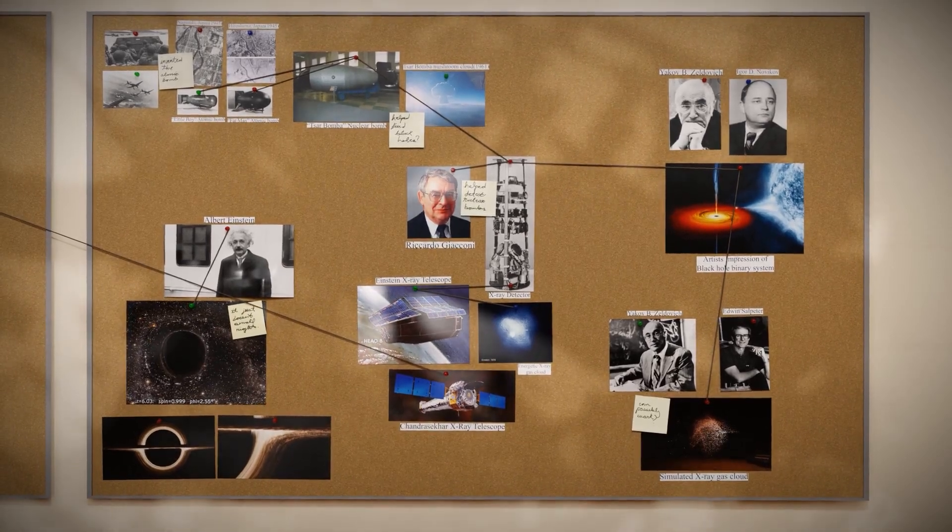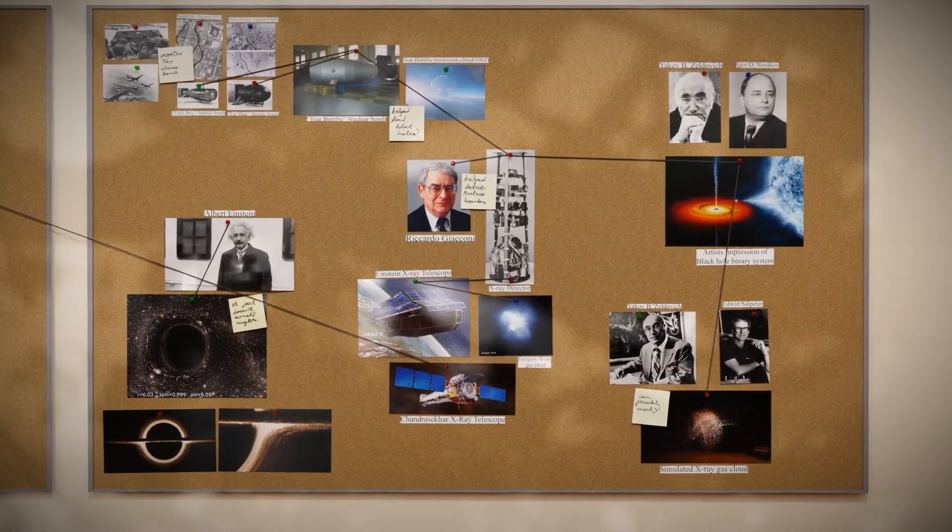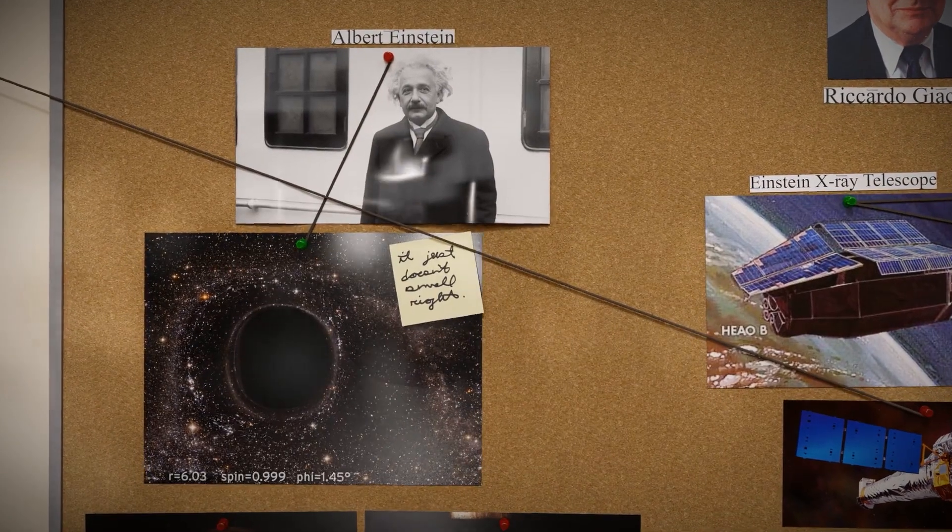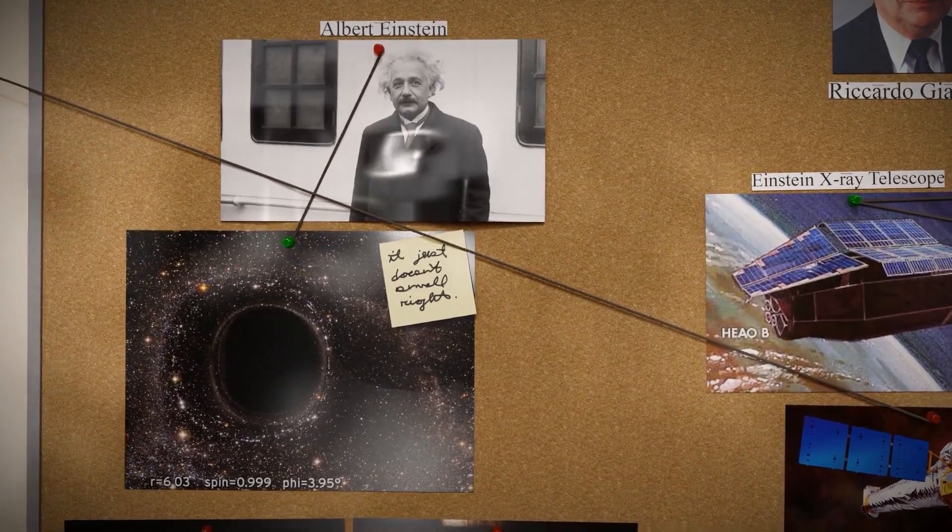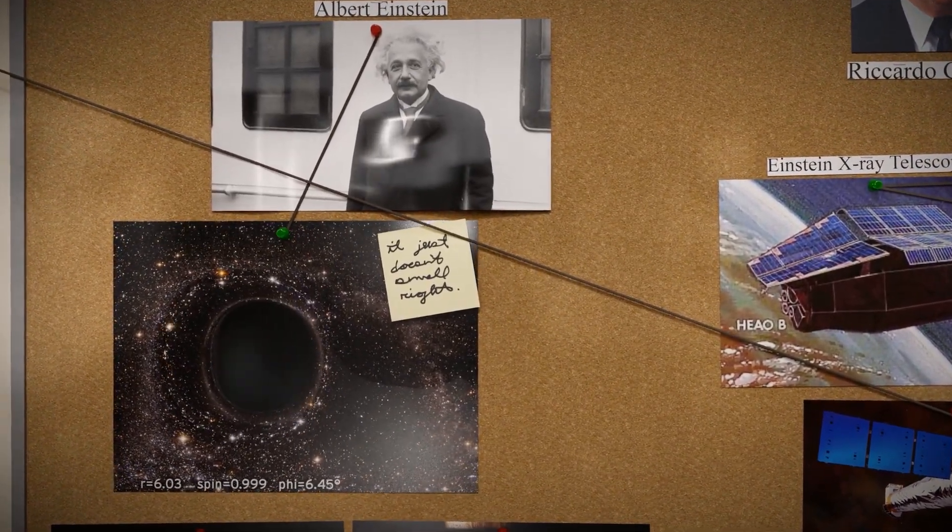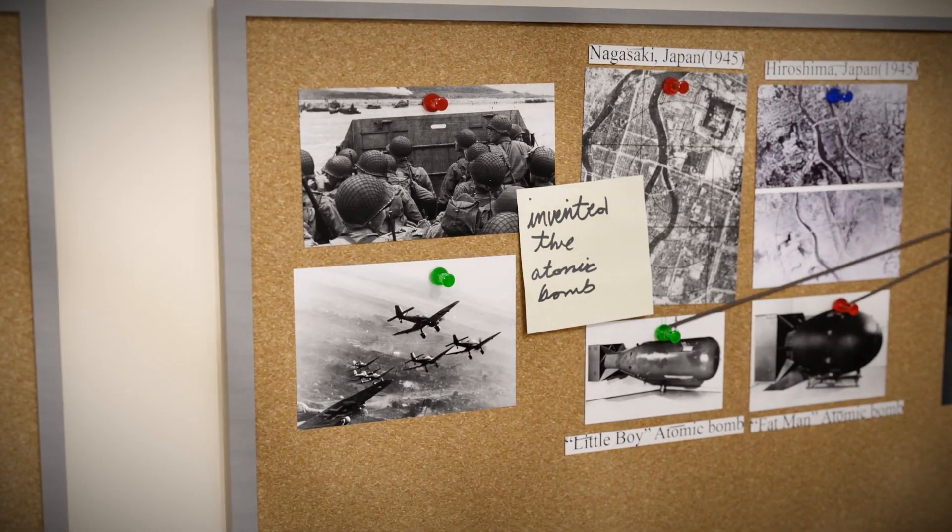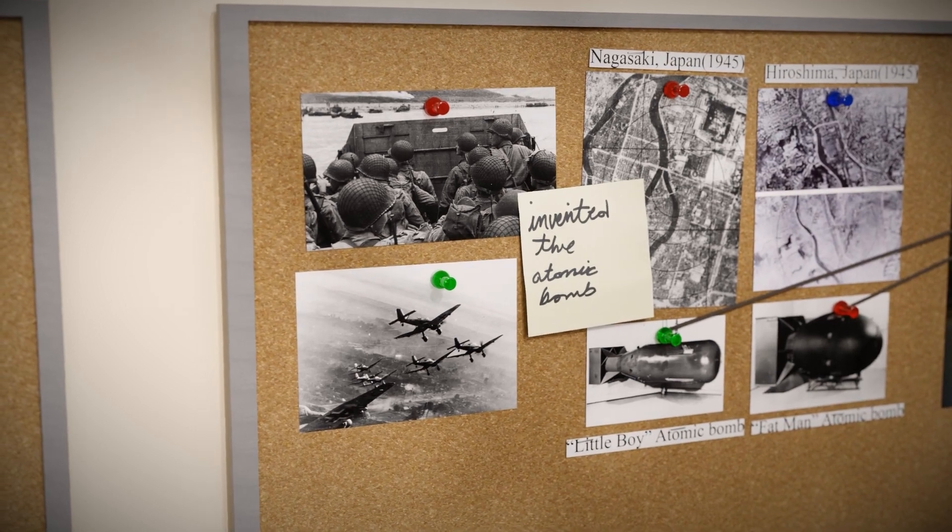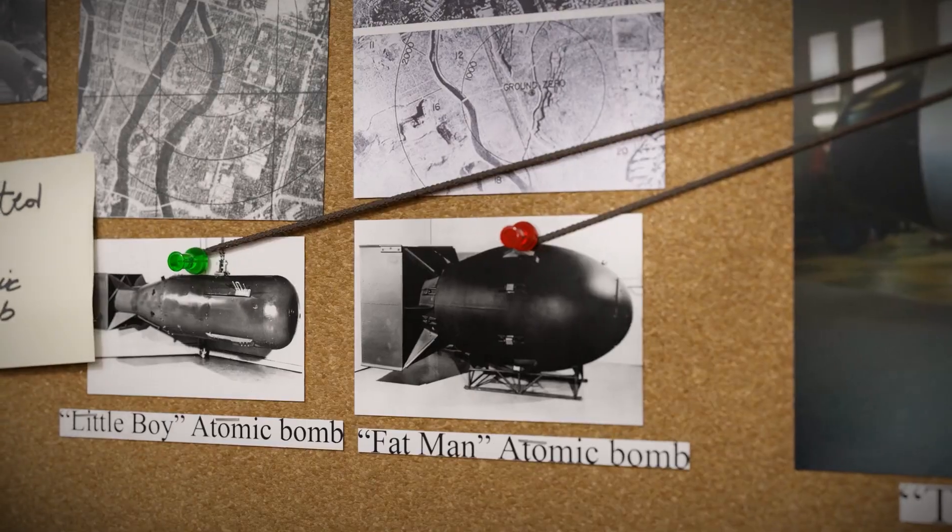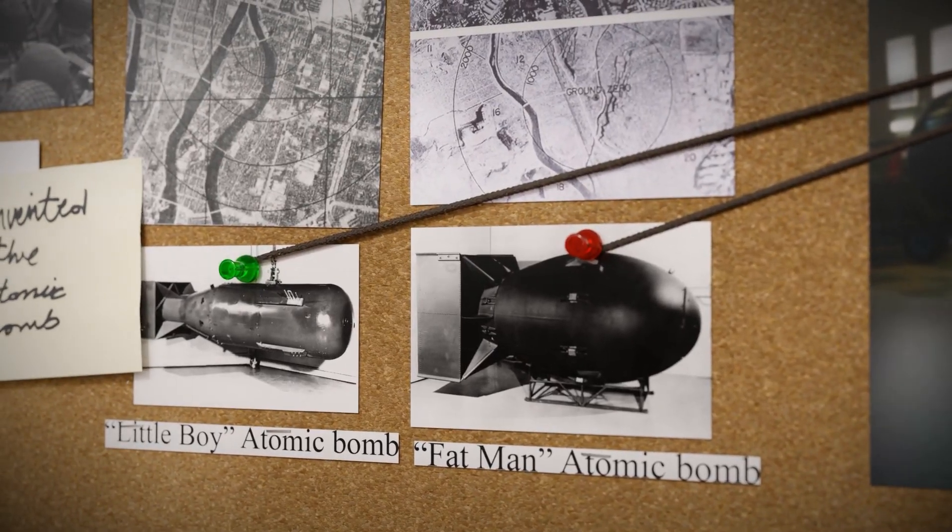In the 1930s, black hole research was very primitive and there was still a lot to learn. Einstein himself argued that black holes couldn't exist in the real universe, and even said that it just doesn't smell right. But with the advent of World War II, physicists quickly shifted their priorities from theoretical physics to nuclear physics, as they tried to develop the almighty nuclear bomb.